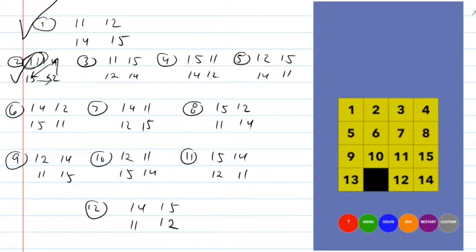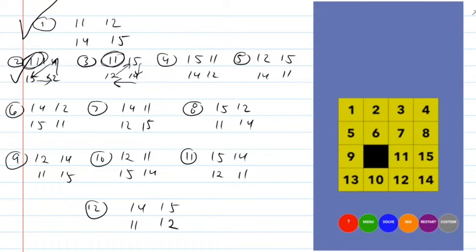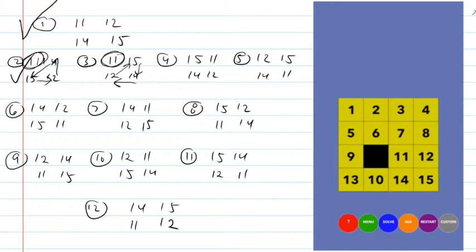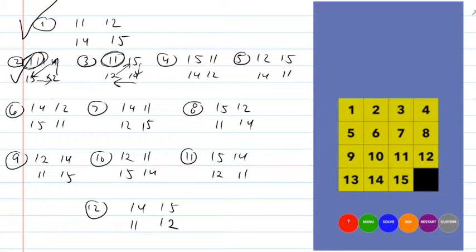In case three, again the eleven is in the right spot — it's just the twelve, fifteen, and fourteen that need a three-cycle. By moving the eleven over, you make space, then cycle around the twelve, fifteen, and fourteen, bring the eleven back and the ten up. That is case three.